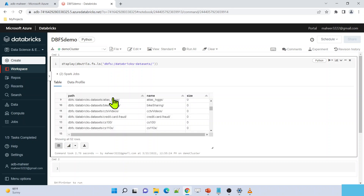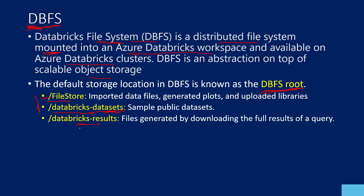We will discuss about this more in detail in upcoming videos. There is also a folder called Databricks results - this folder holds the results that you download from your cell outputs. The file store folder is the main folder under which you actually import your data. If you want to upload some file and play with the data, this is the folder under which you usually place the data.